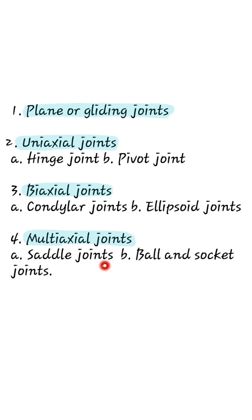Multiaxial joints: saddle joints include the first carpometacarpal joint, sternoclavicular joint, incudomalleolar joint, and calcaneocuboid joint. Ball and socket joints include the shoulder joint, hip joint, and talocalcaneonavicular joint.